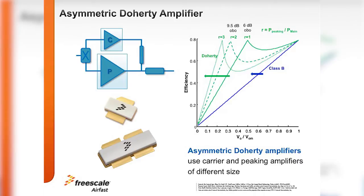If you implement the Doherty amplifier differently, you can actually move the efficiency peak around. You could either increase the size of the main amplifier compared to the peaking amplifier — if you do that, your efficiency peak will move to lower power back-off levels. But if you increase the peaking amplifier compared to the main amplifier, you can move the efficiency peak towards higher back-off levels. To get an optimum peak-to-main amplifier ratio, typically people look at 1.5 to 2 times larger peaking amplifiers compared to the main amplifier.